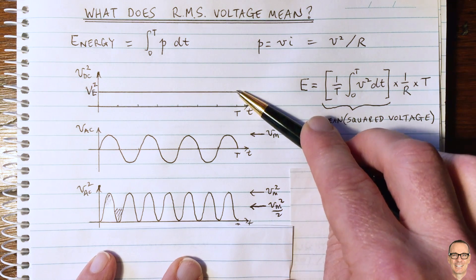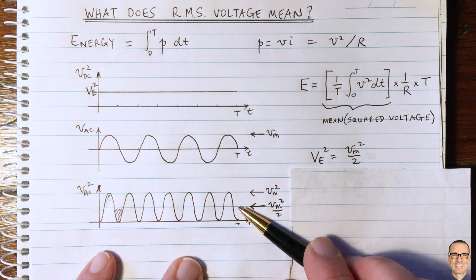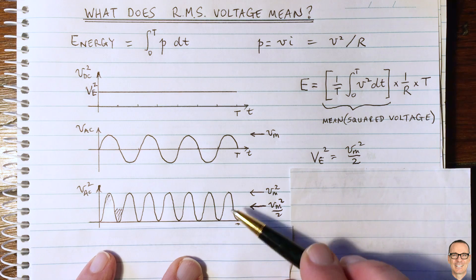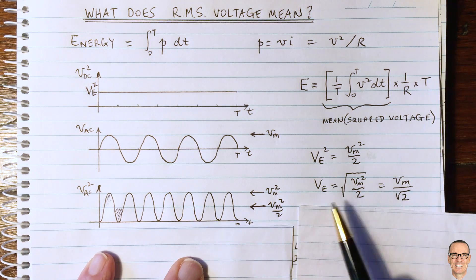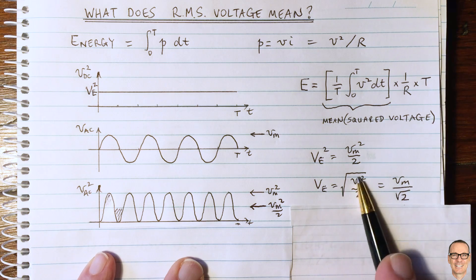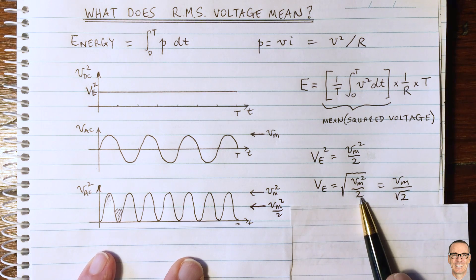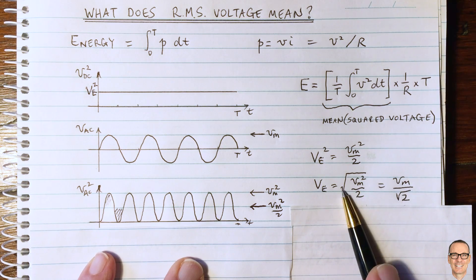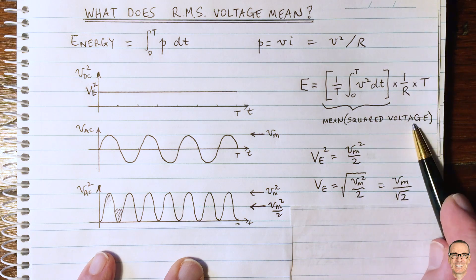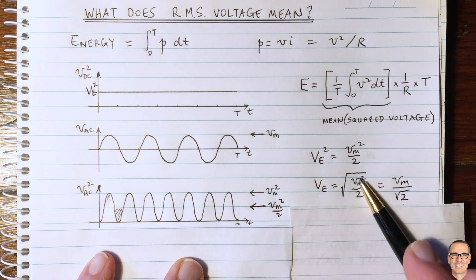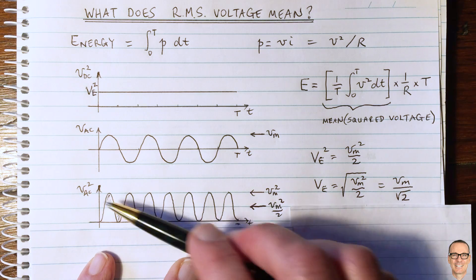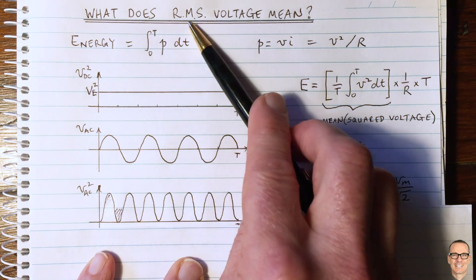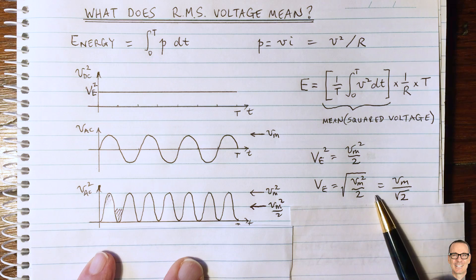For an equivalent DC circuit, that would give the same energy and power as this AC circuit. So we take the square root of both sides and we see that VE equals the square root of Vm squared on 2. And that is the root of the mean squared voltage, because this is the mean of the squared voltage. It's the halfway point. It's the average of the squared voltage. So this is the root mean squared. This is where it comes about.